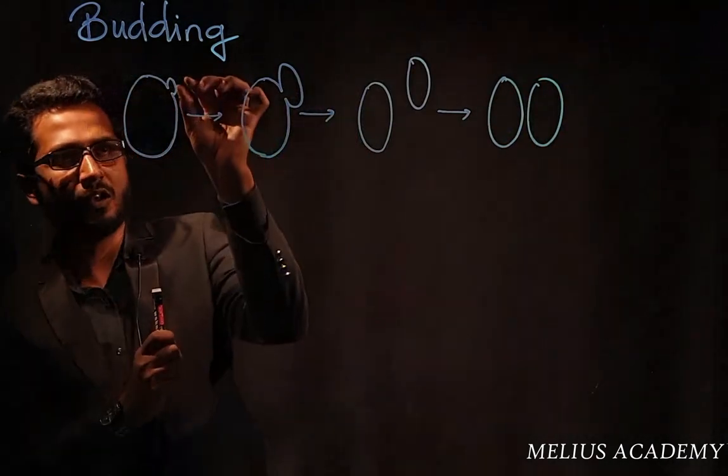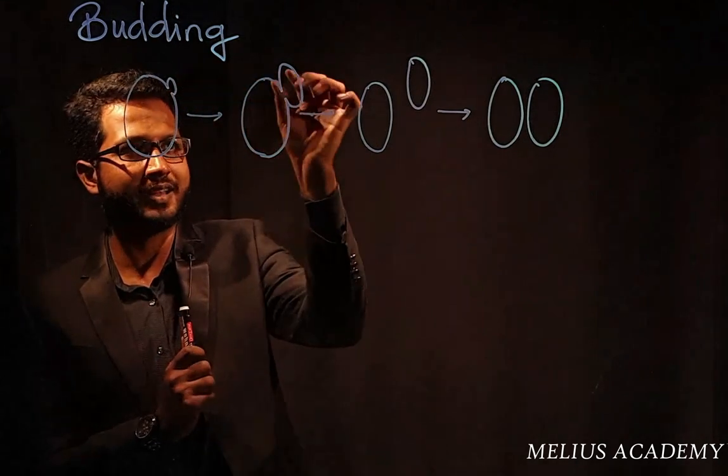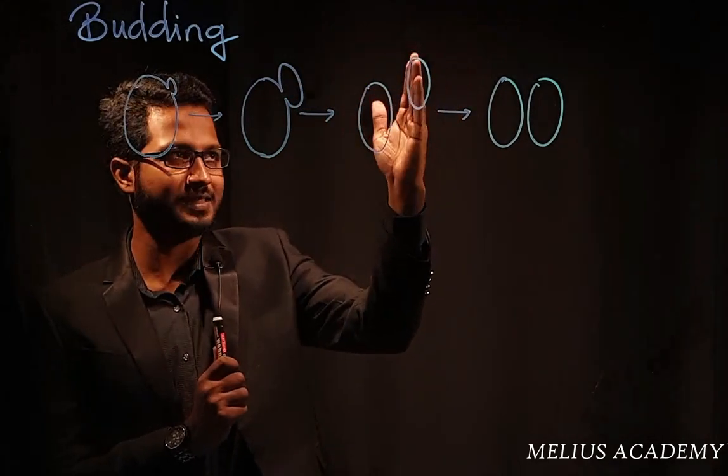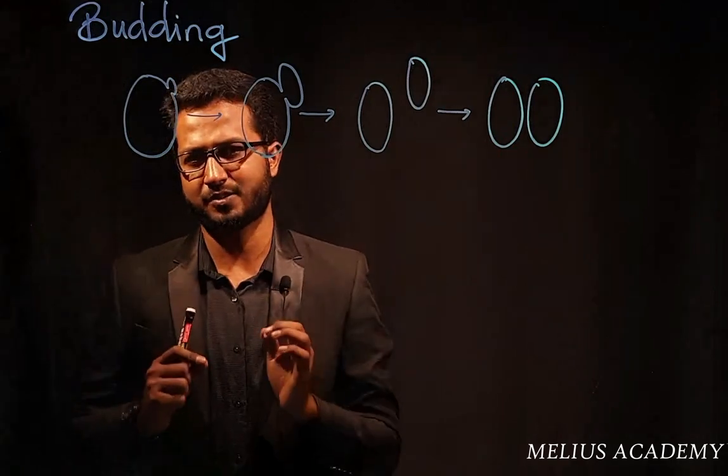This process where a small outgrowth is formed on the parent body, this outgrowth is going to increase in its size. Once increased, it's going to get separated. Once separated, it's going to regrow to the size of its parent. This process is known as budding.